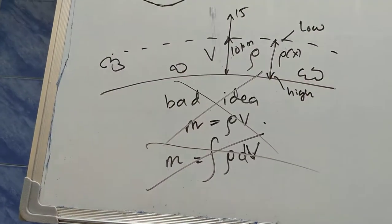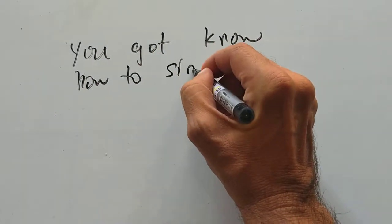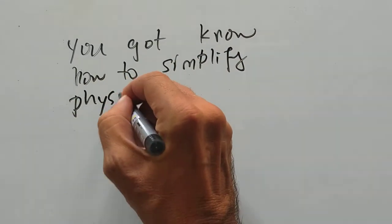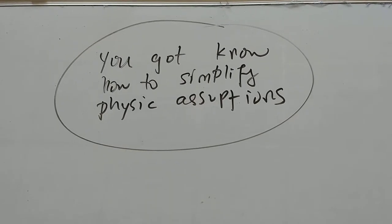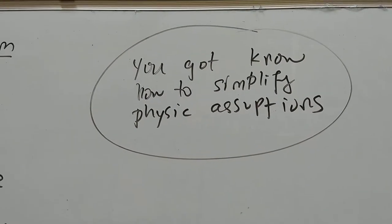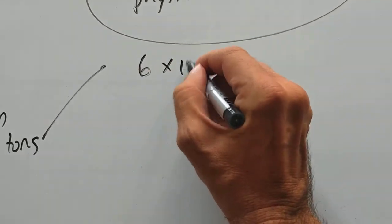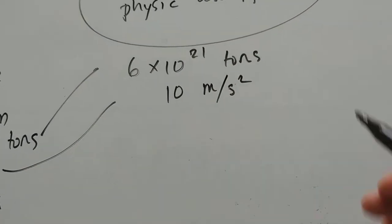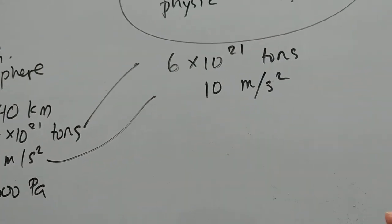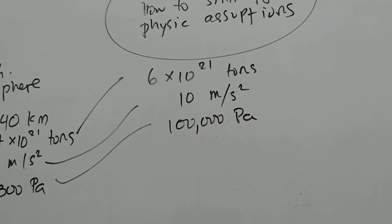You're violating principles of problem solving. The principle that we want to stick to is you have to know how to simplify physics assumptions. You have to know what kind of simplifications to make. It's like poker, you have to know what to do. So let's make simplifications. Mass, that's 6 times 10 to the 21 tons. G, we're going to simplify that and just make that 10 meters per second squared. This is back of the envelope computation. Our pressure is 100,000 Pascal.